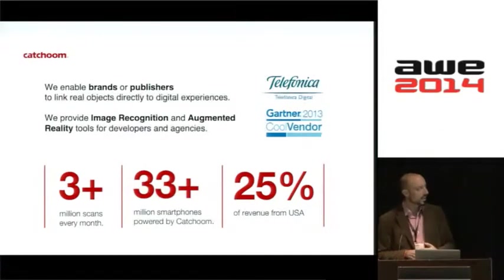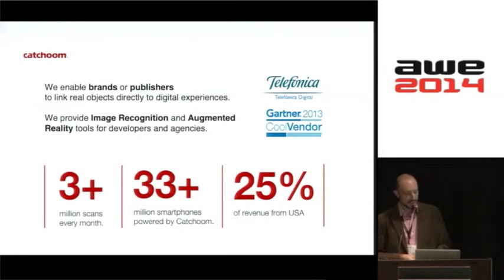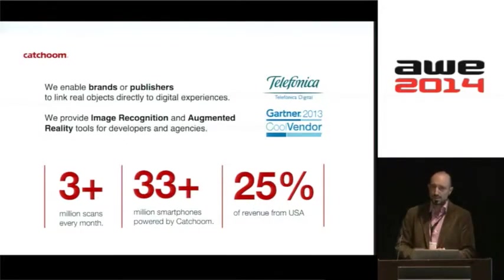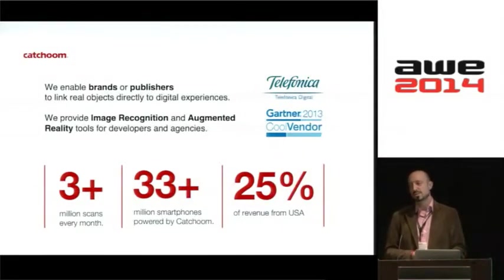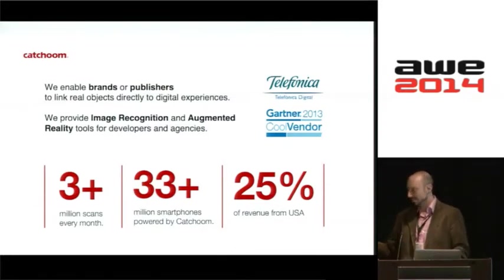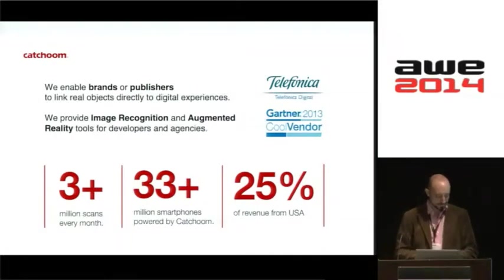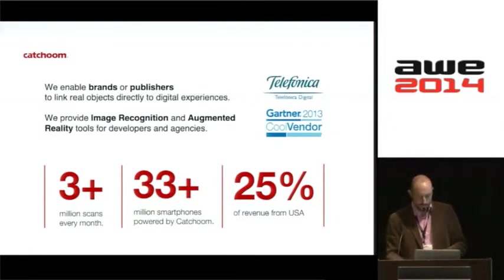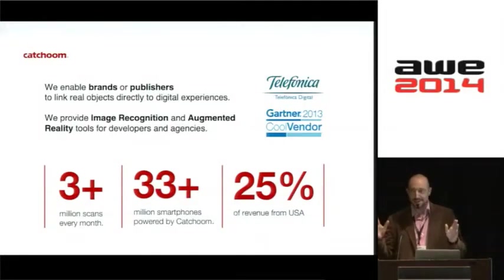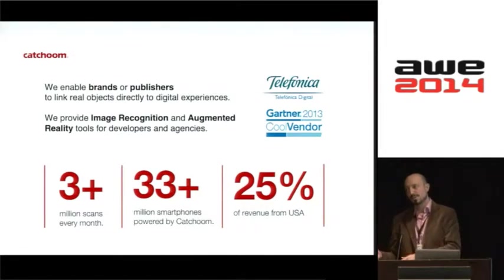We've developed image recognition technology which is currently on over 30 million smartphones worldwide. At the beginning of this year, we launched a new product called Crafter. The aim of Crafter was to combine what is arguably one of the best image recognition technologies in the world with the easiest-to-use AR toolkit. We're also going to be launching offline image recognition later this year — the aim being to provide seamless experiences whether you're online and connected or offline without a connection.